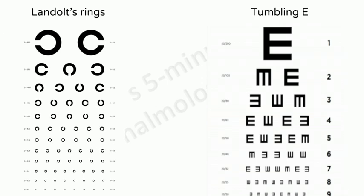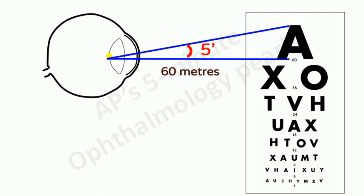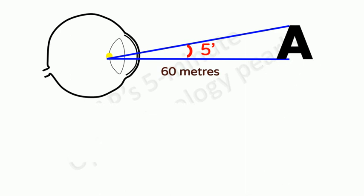For illiterates, the Landolt's rings in 4 or 8 directions and the tumbling E-charts may be used. The actual size of each of these letters on the chart can be calculated.